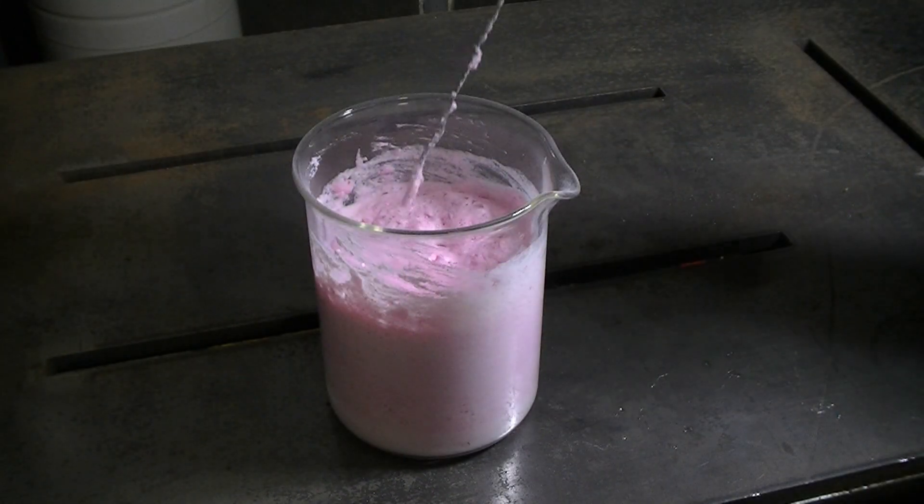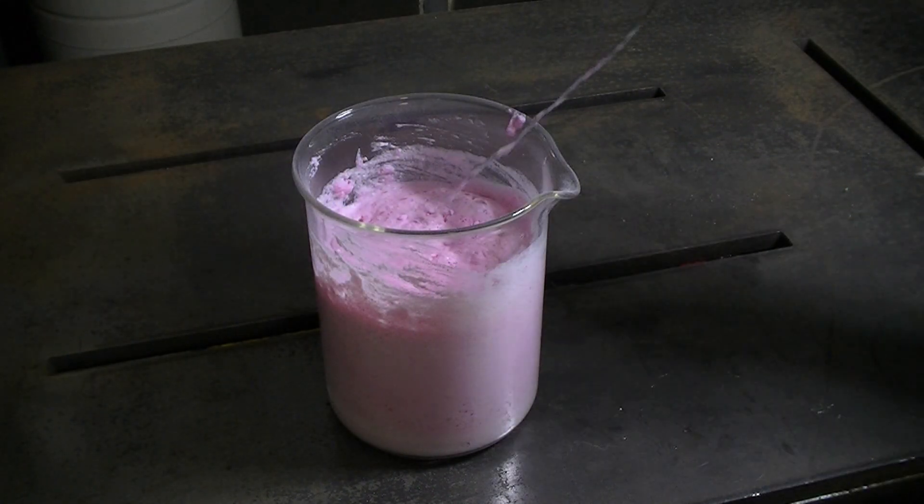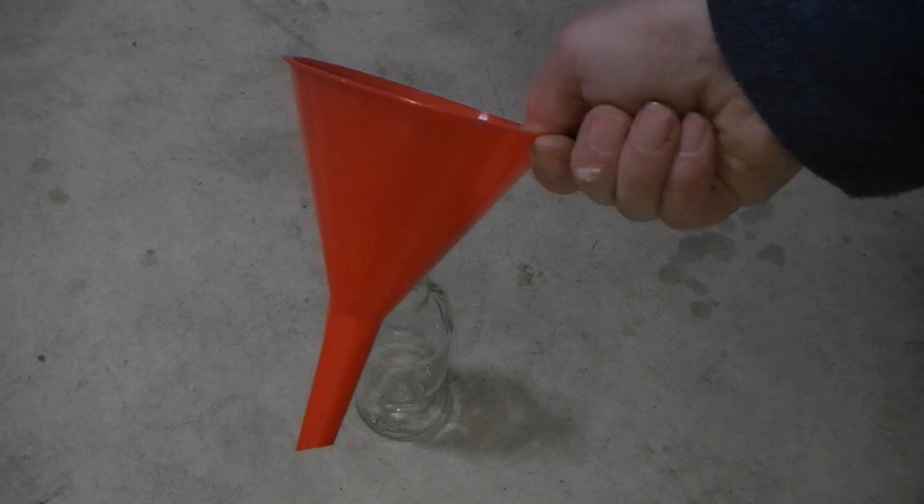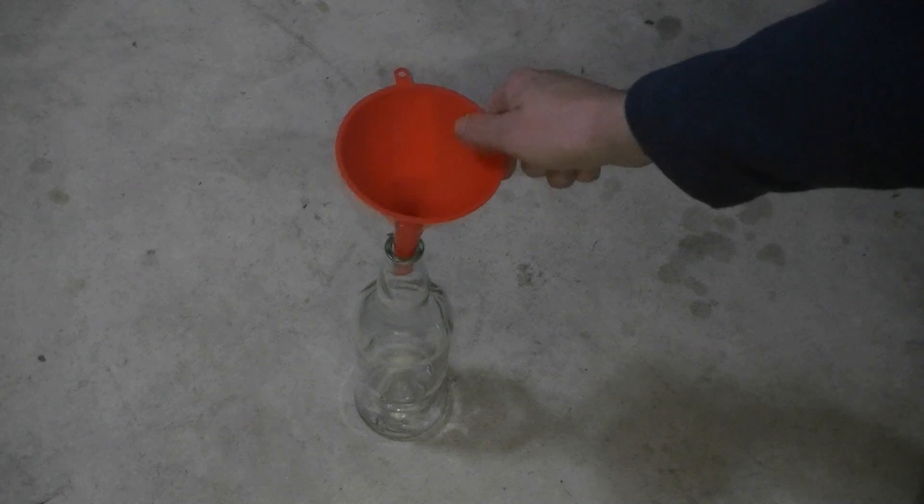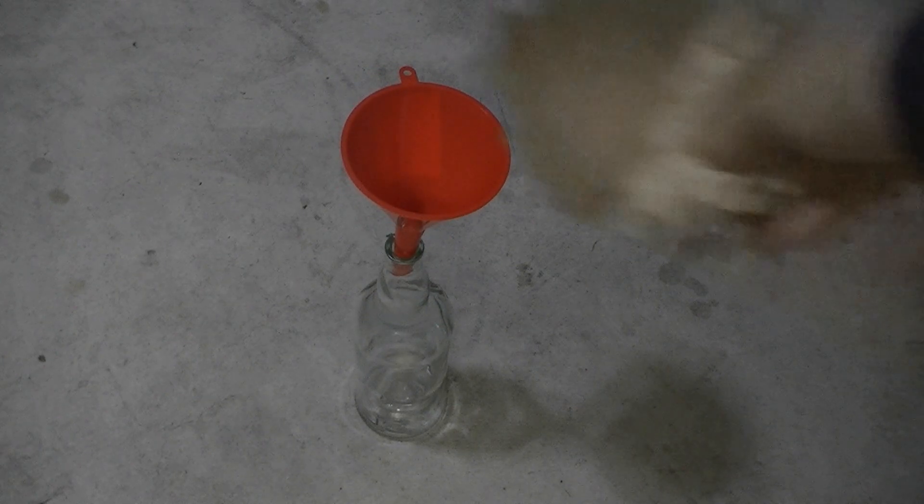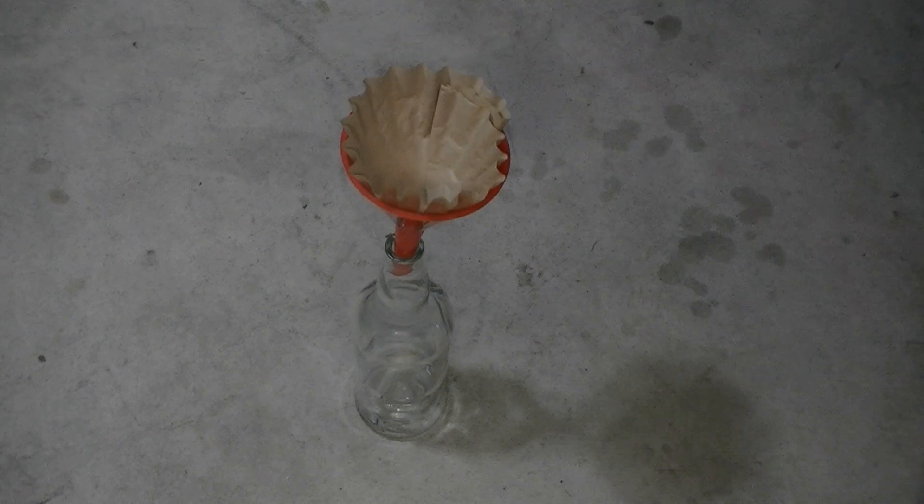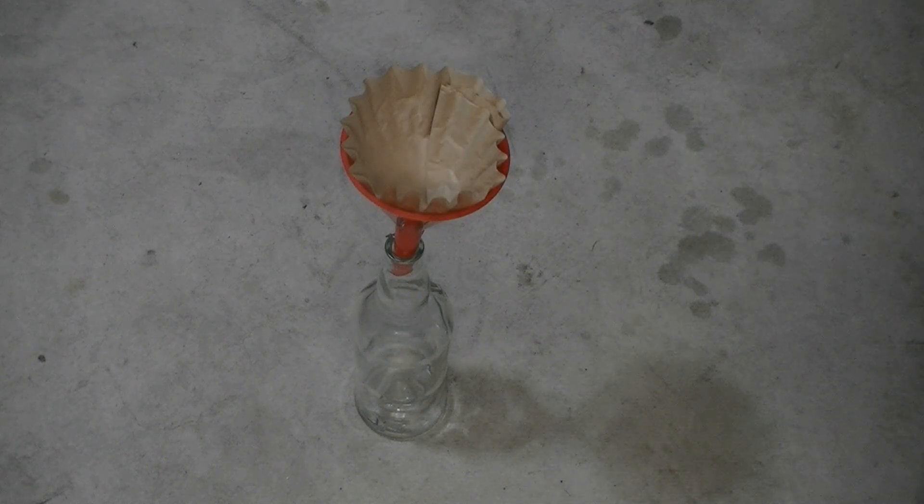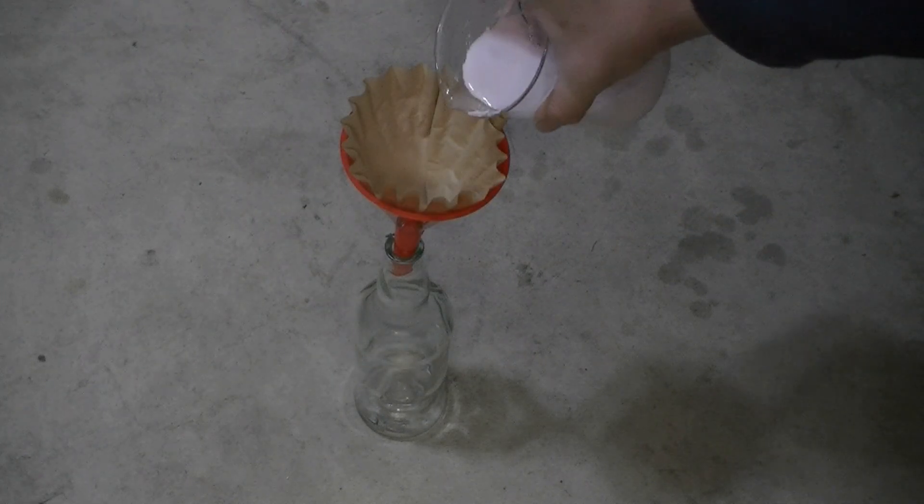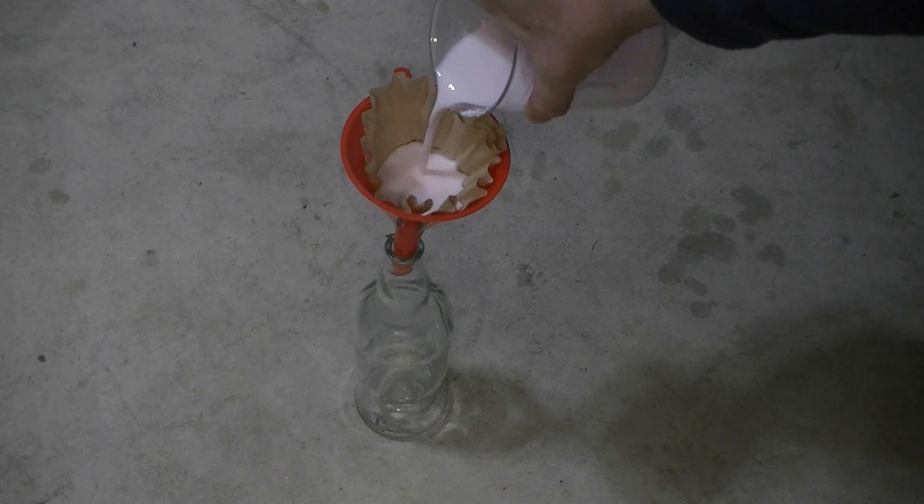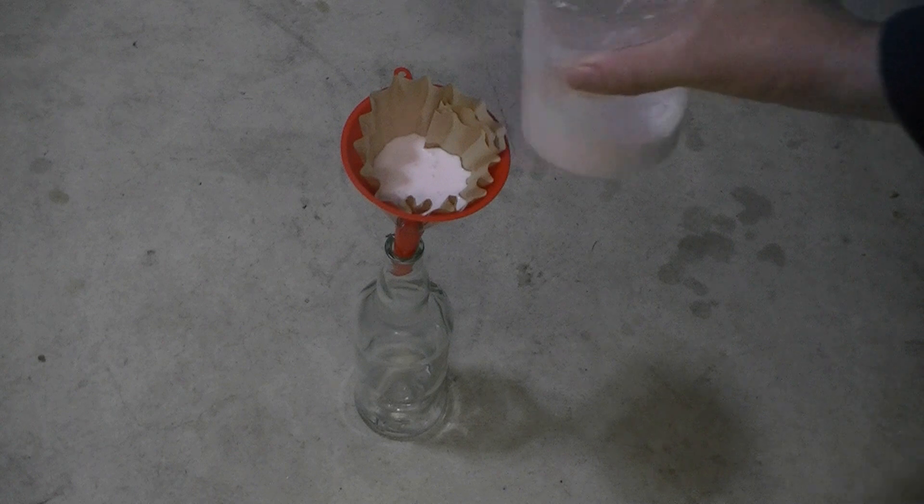So let the reaction sit overnight. The next phase now is to filter the solution. We use a funnel and we're going to use a coffee filter paper. Then we pour our solution through the filter, and the bismuth chloride should go through the filter as it is aqueous in the solution, leaving behind the leftover products, probably including a lot of starch.